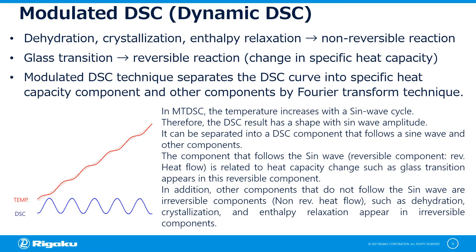Since the glass transition is small, it often overlaps with other reactions and disappears. For example, dehydration, crystallization, and enthalpy relaxation can be considered as phenomena that may overlap with the glass transition. When these reactions overlap with the glass transition temperature, the glass transition is measured by changing the sample pan or measuring a second run, but dynamic DSC, which is a modulated DSC, is also an effective means.